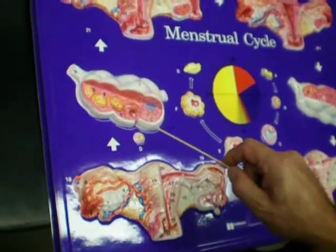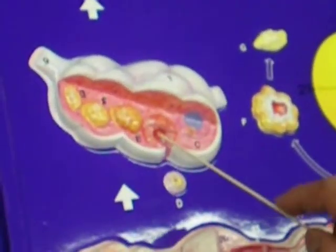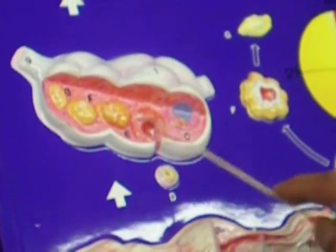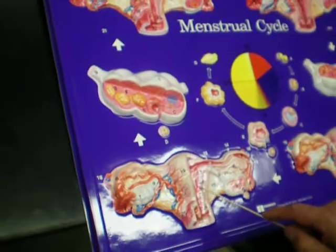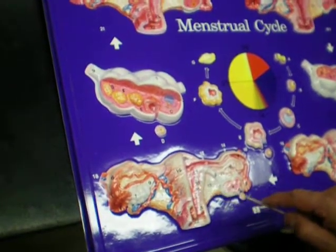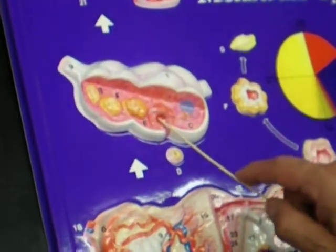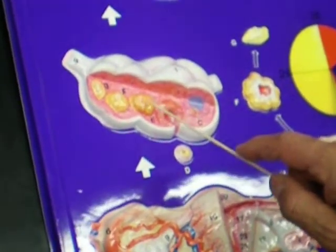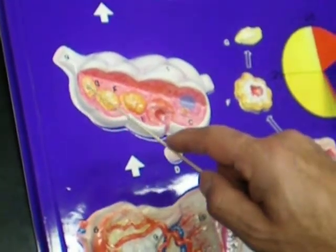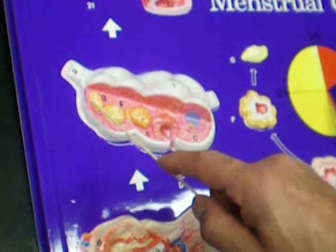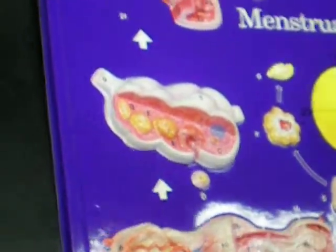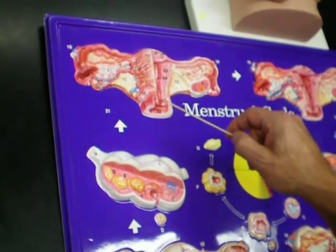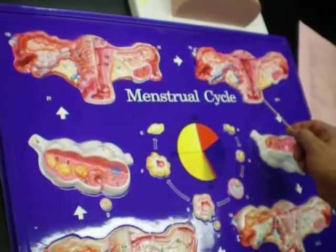When this follicle ruptures, it becomes a gland called the corpus luteum. The corpus luteum produces progesterone, which stimulates endometrial vascularization. After about 10 to 15 days, the corpus luteum becomes the corpus albicans and no longer functions. The level of progesterone drops, and that causes devascularization, marking the beginning of the menstrual cycle.